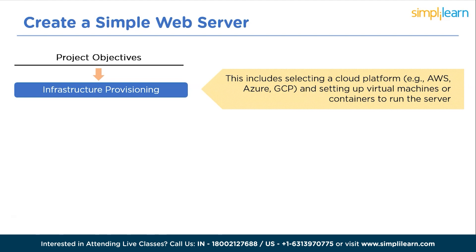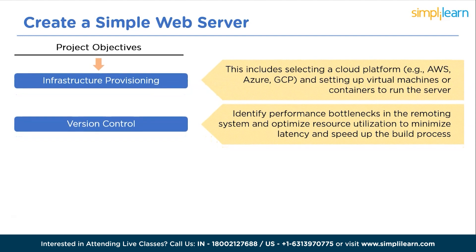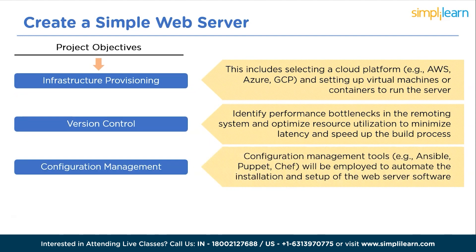The next is version control: version control will be used to manage the project's source code, allowing for collaboration, code management, and easy rollback to previous versions if necessary. The next is configuration management: tools such as Ansible, Puppet, and Chef will be employed to automate the installation and setup of the web server software, ensuring consistency across environments and simplifying the deployment process.